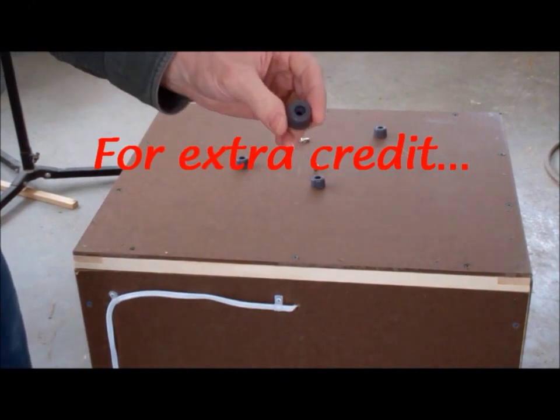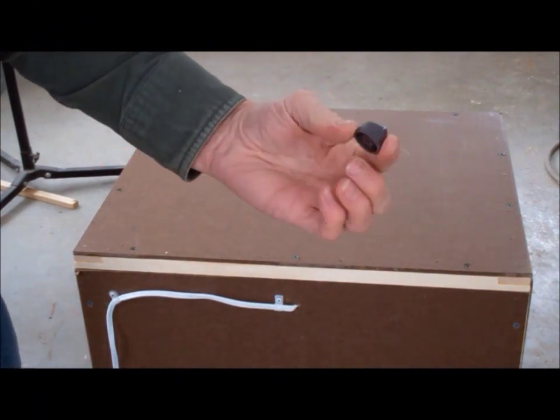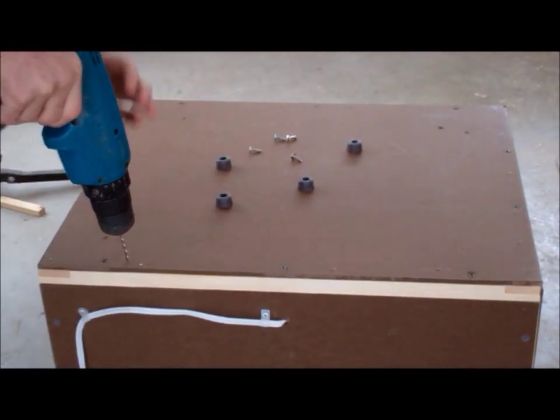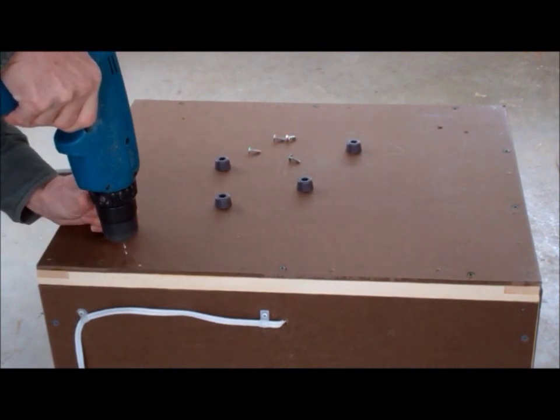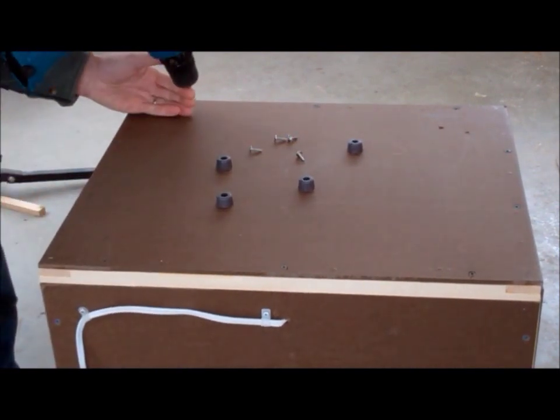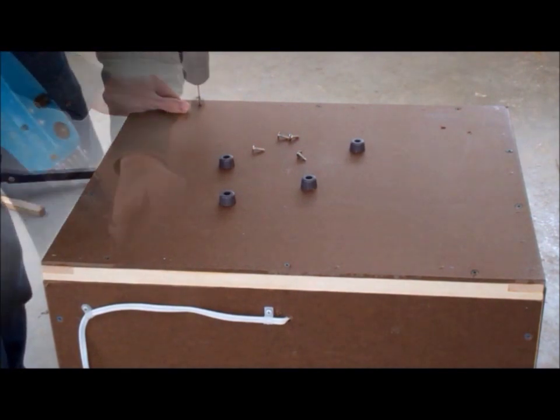For extra credit in this project, consider mounting some of these small plastic bumpers, or feet, on the bottom of your honey bucket heater. The ones that I am using simply screw in and only take a few moments.